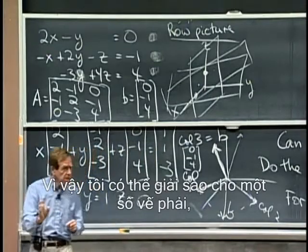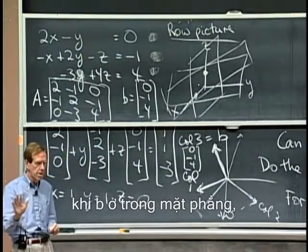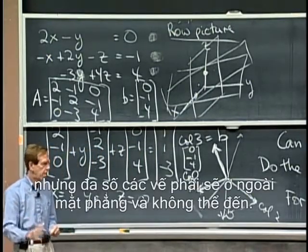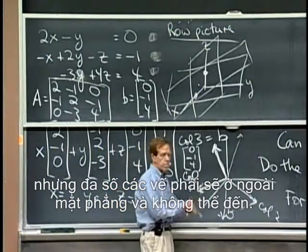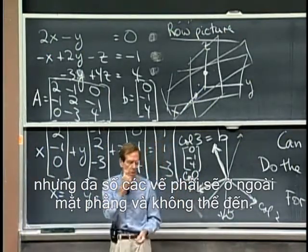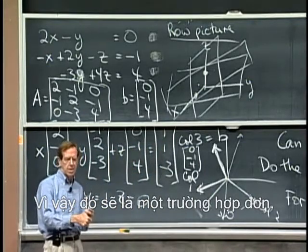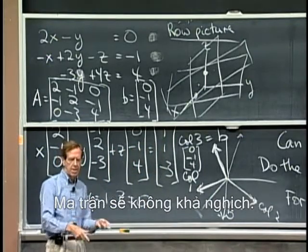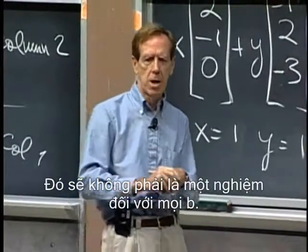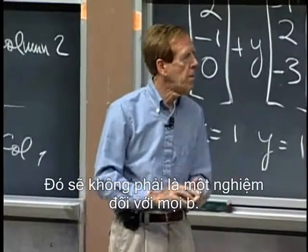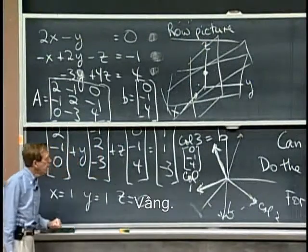I could solve it for some right-hand sides when B is in the plane, but most right-hand sides would be out of the plane and unreachable. So that would be a singular case. The matrix would be not invertible. There would not be a solution for every B — the answer would become no for that.